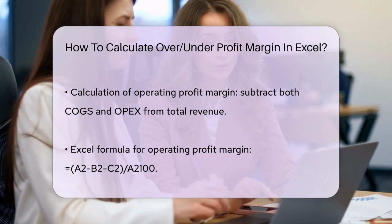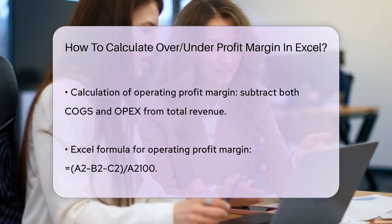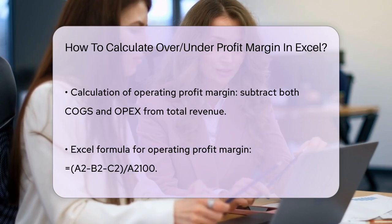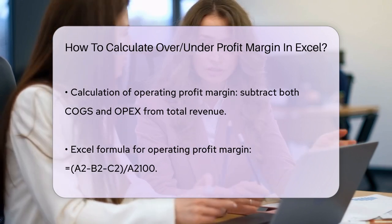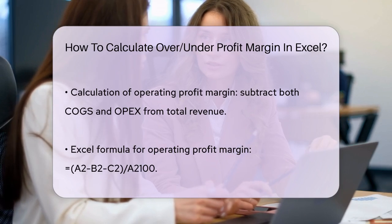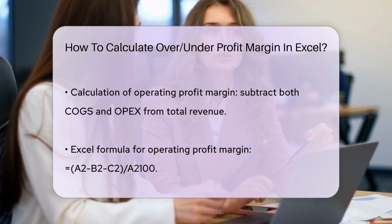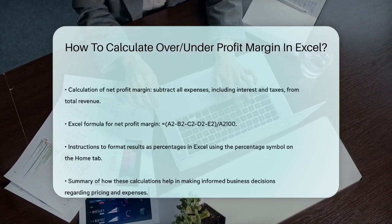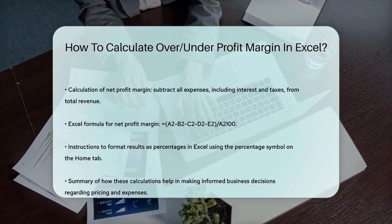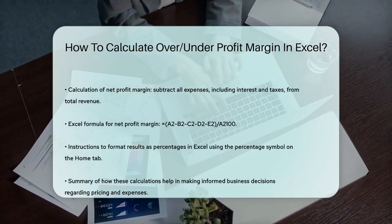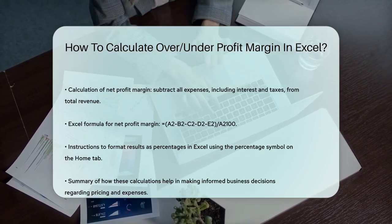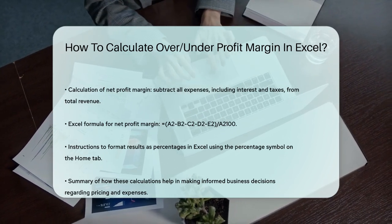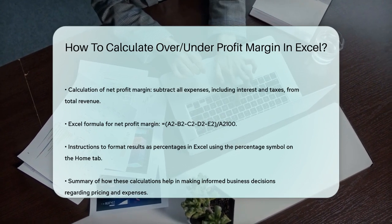Finally, for the net profit margin, you subtract all expenses — including interest and taxes — from the total revenue. So if your interest is $500 and taxes are $1,500, your net income would be $10,000 minus $4,000 minus $1,000 minus $500 minus $1,500, which equals $3,000. Then you divide this net income by the total revenue and multiply by 100. The Excel formula would be: =(A2-B2-C2-D2-E2)/A2*100, where D2 is the interest and E2 is the taxes.